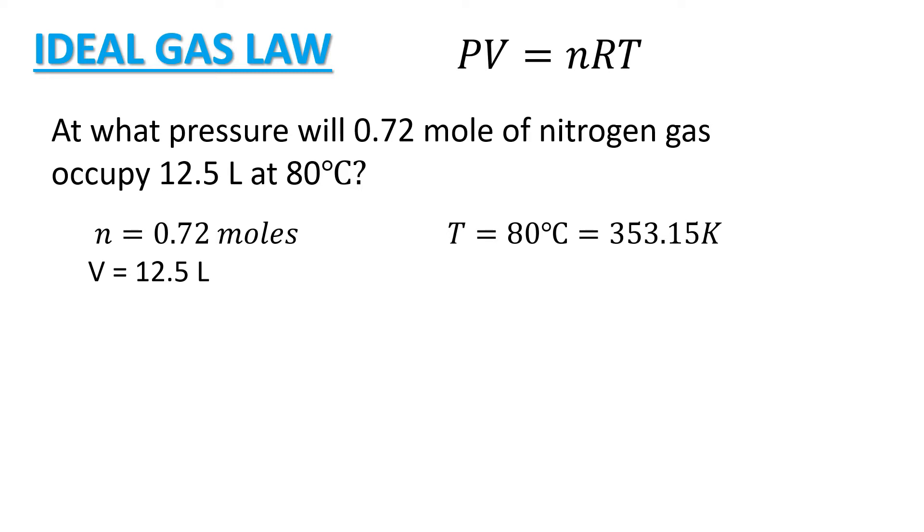The volume it occupies is 12.5 liters and the temperature is 80 degrees Celsius. Every time that we're going to use the temperature in our solution, we must first convert our temperature in terms of absolute temperature. So we simply add 273.15 to our given temperature in Celsius scale. So that is equal to 353.15 Kelvin.